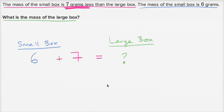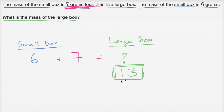So what's the mass of the large box? Six plus seven is 13 grams, and we're done.